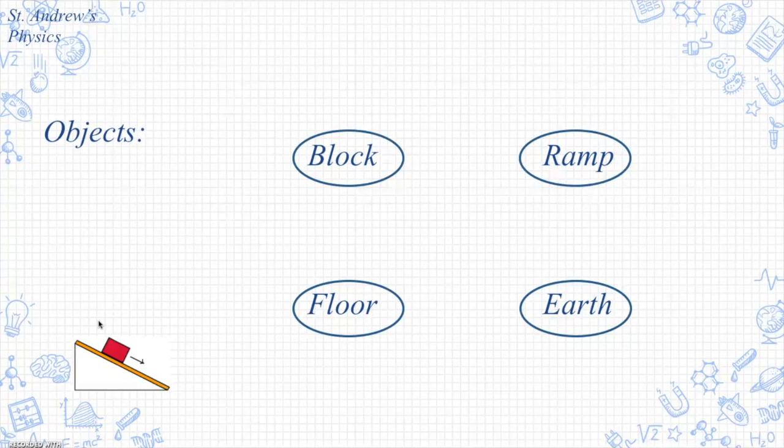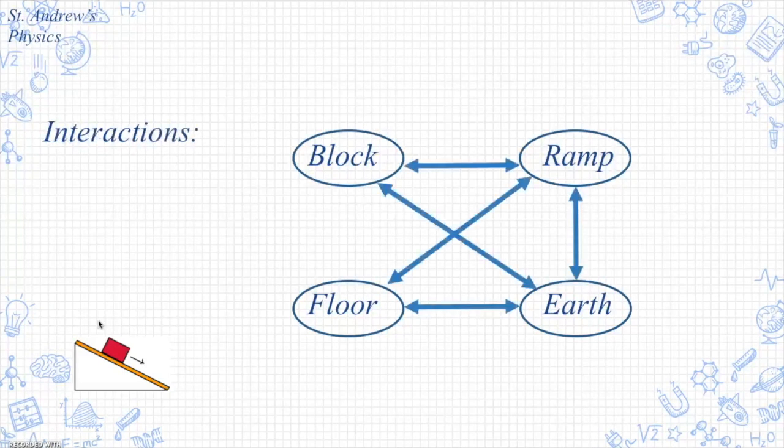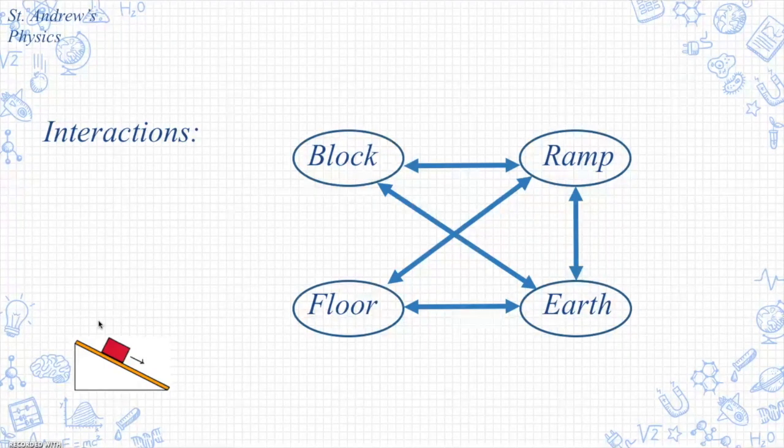We want to take a look at that picture or the observation and recognize are any of those objects interacting with each other, and to do that we'll represent those with some double arrows. These double arrows show that the earth is interacting with each of them and that the ramp is touching the block and the ramp is touching possibly the floor.